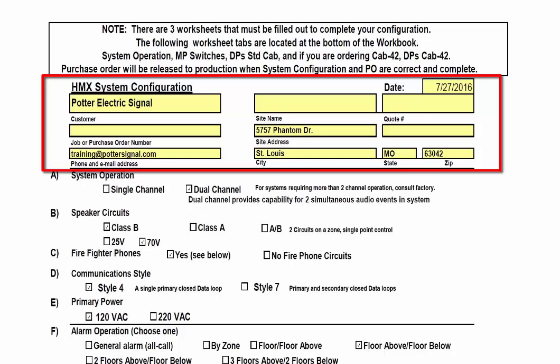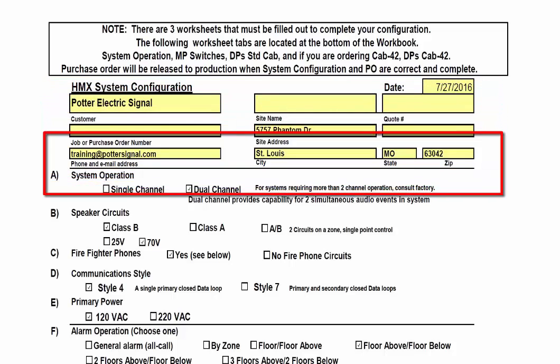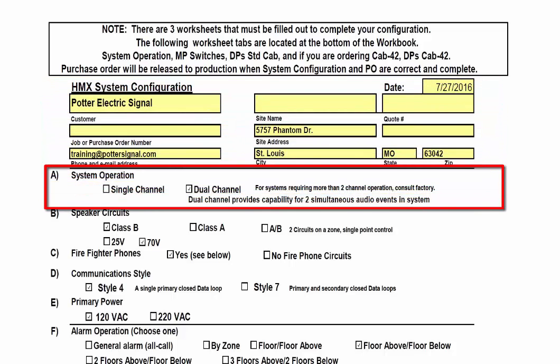The first information is typical information such as where the panel is to be located and job or purchase order information. Option A, System Operation, involves choosing a Single Channel or Dual Channel Operation.